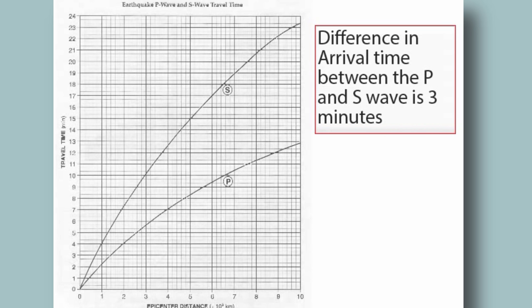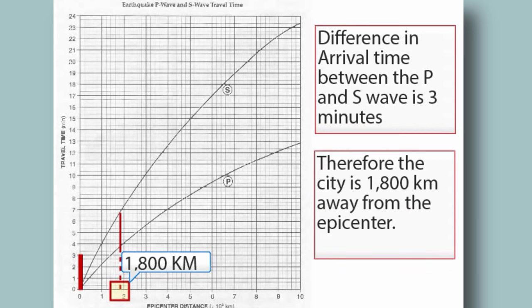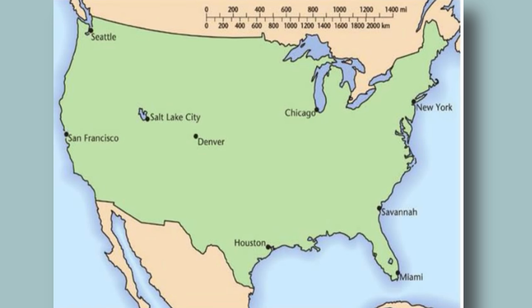Now we look on the time versus distance graph, and we take the difference in time, three minutes, from the time y-axis. Then we move it until it fits snugly between the pre-plotted S and P lines. Then we look down to the distance axis to read how far away the earthquake started from Salt Lake City.